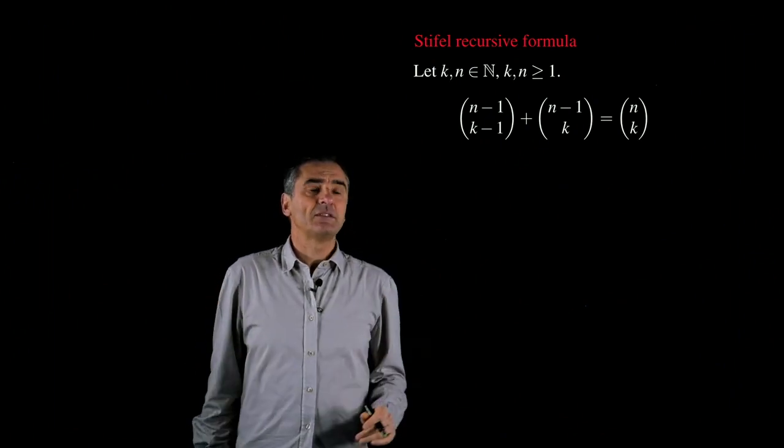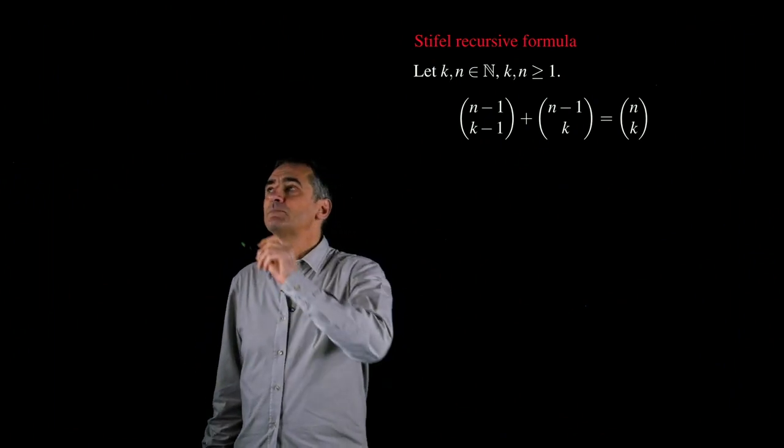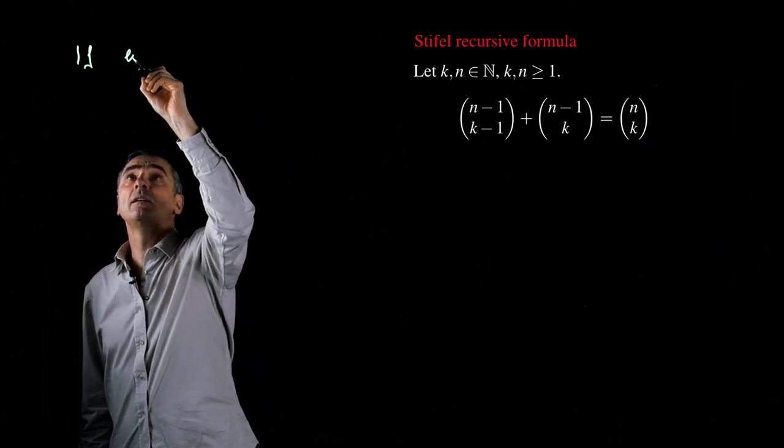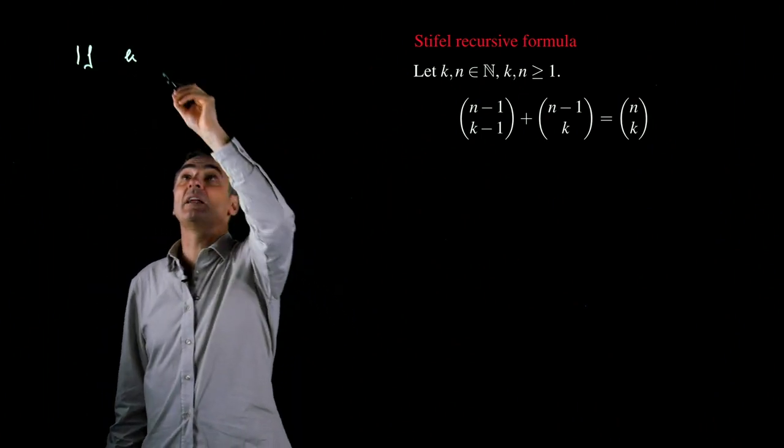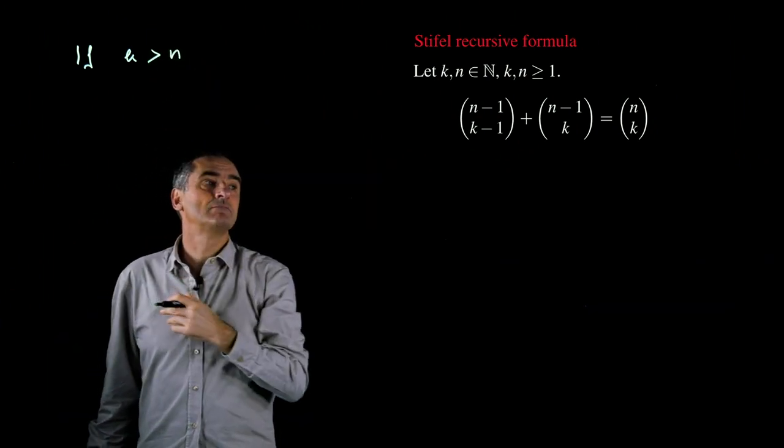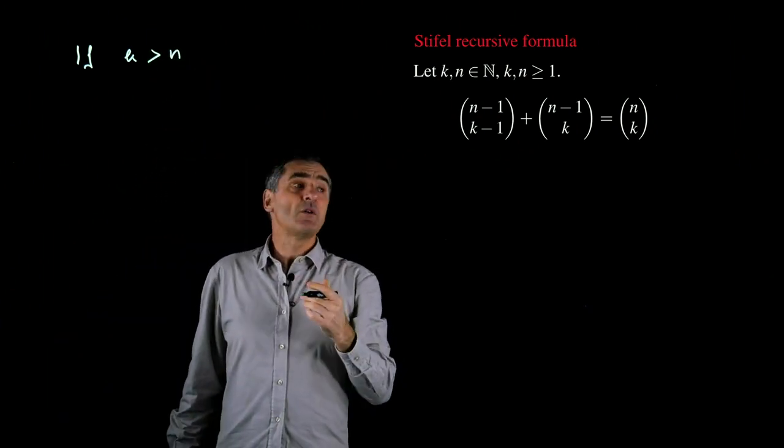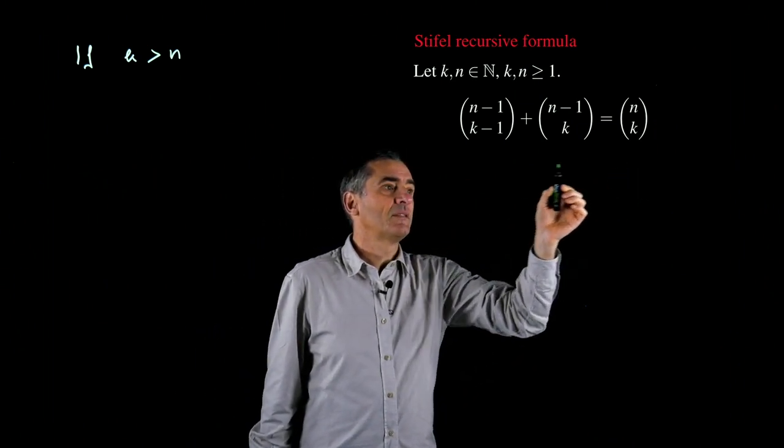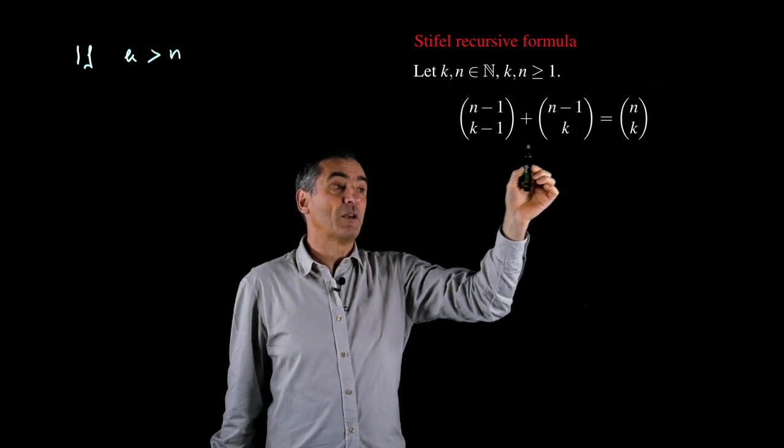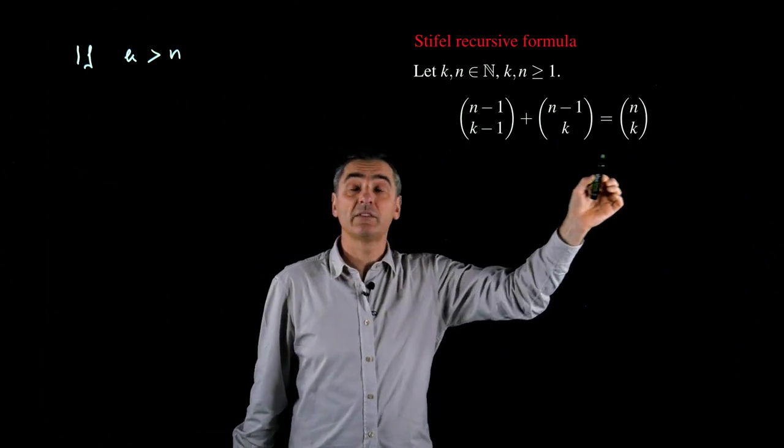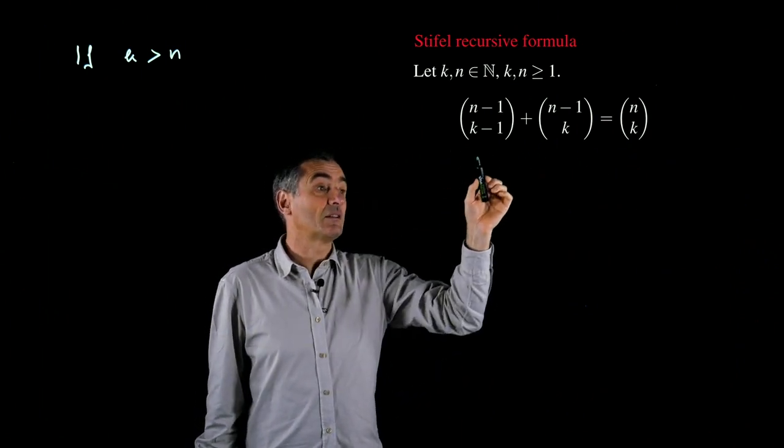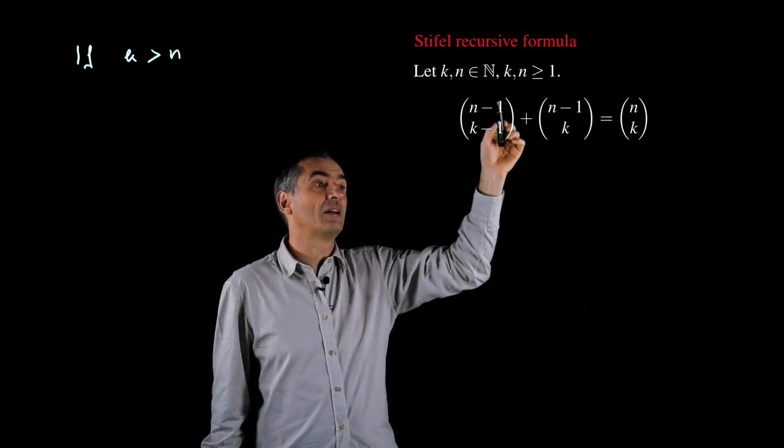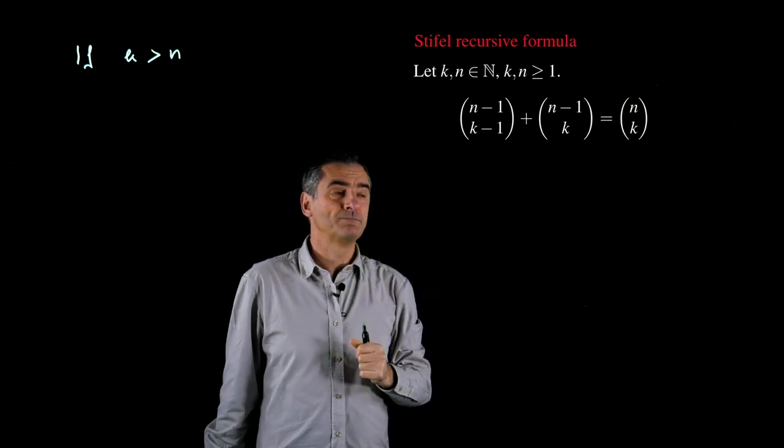It's immediately clear that if k is greater than n, what you have immediately is that this is 0, this is 0, and this is 0. Because in all the cases, you have that the number below is greater than the number above.